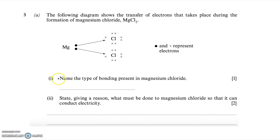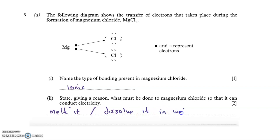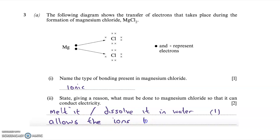The first part of this question shows a diagram of electron transfer during the formation of magnesium chloride. Any bonding that involves transfer of electrons between a metal and a non-metal is ionic bonding, so you get one mark for saying ionic bonding. It then asks what must be done to magnesium chloride so it can conduct electricity. You need to melt it or dissolve it in water — one mark for that. That's because the ions need to be free to move to conduct electricity, so if you said this allows the ions to be free to move, you get the second mark.